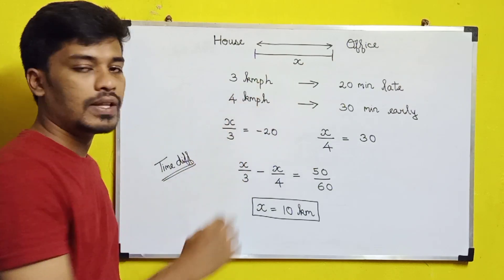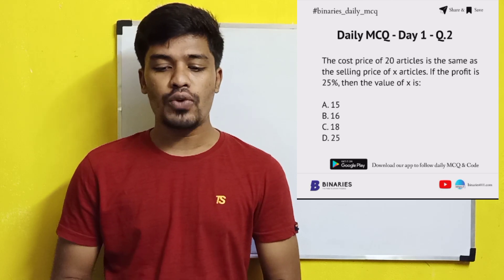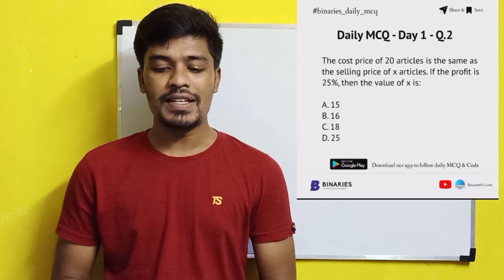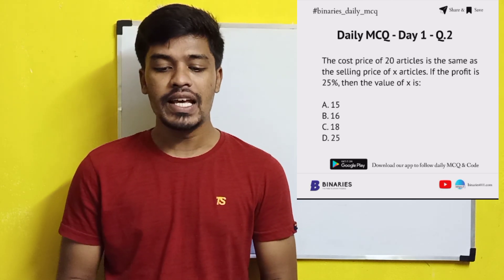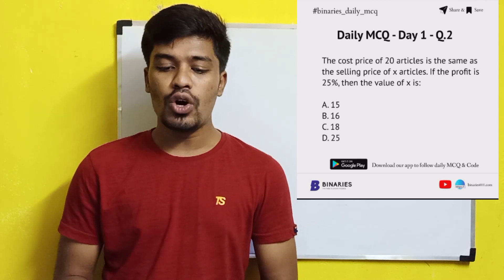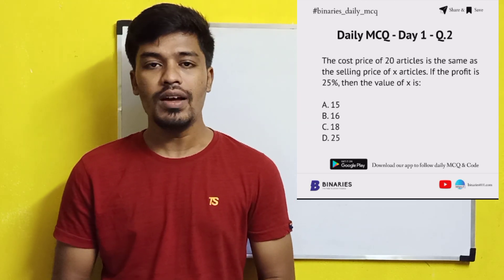So the distance between the house and office is found. Now the second question: the cost price of 20 articles is the same as the selling price of x articles. If the profit is 25%, find the value of x.